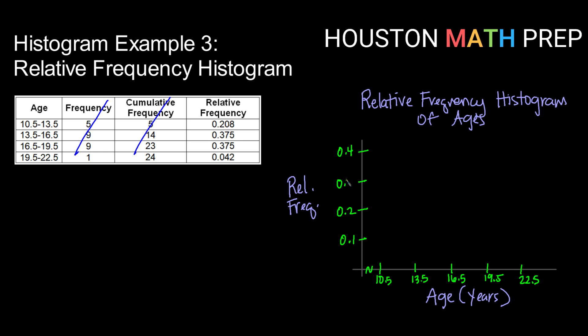So I might choose to label by tenths, so 0.1, 0.2, 0.3, 0.4. Or noticing that these are kind of in between, maybe I'll even put my little halfway marks. So that would be 0.05, 0.15, 0.25, and 0.35 in between my tenths.